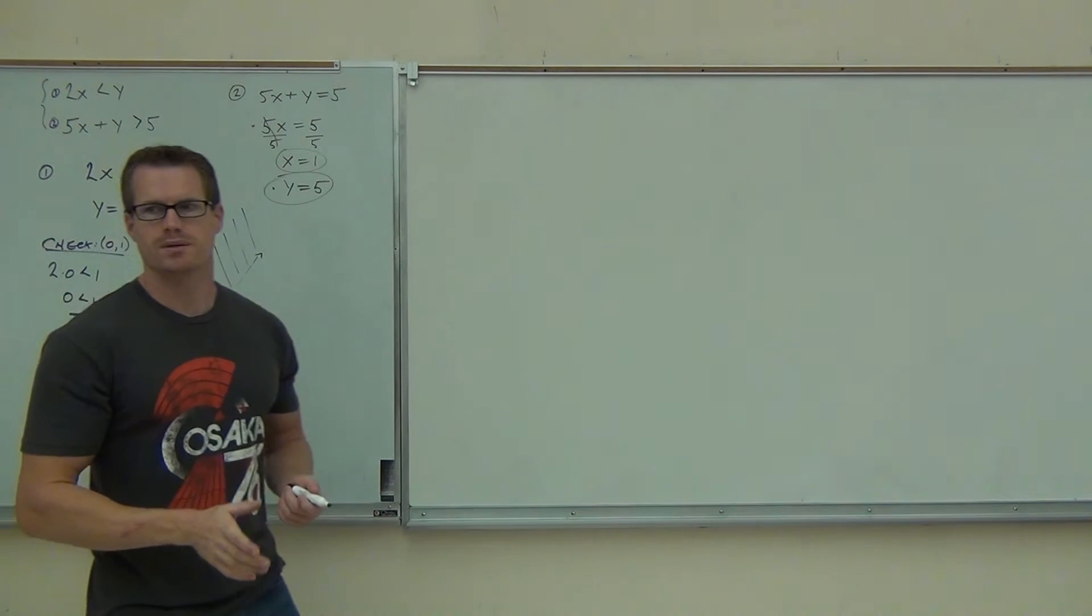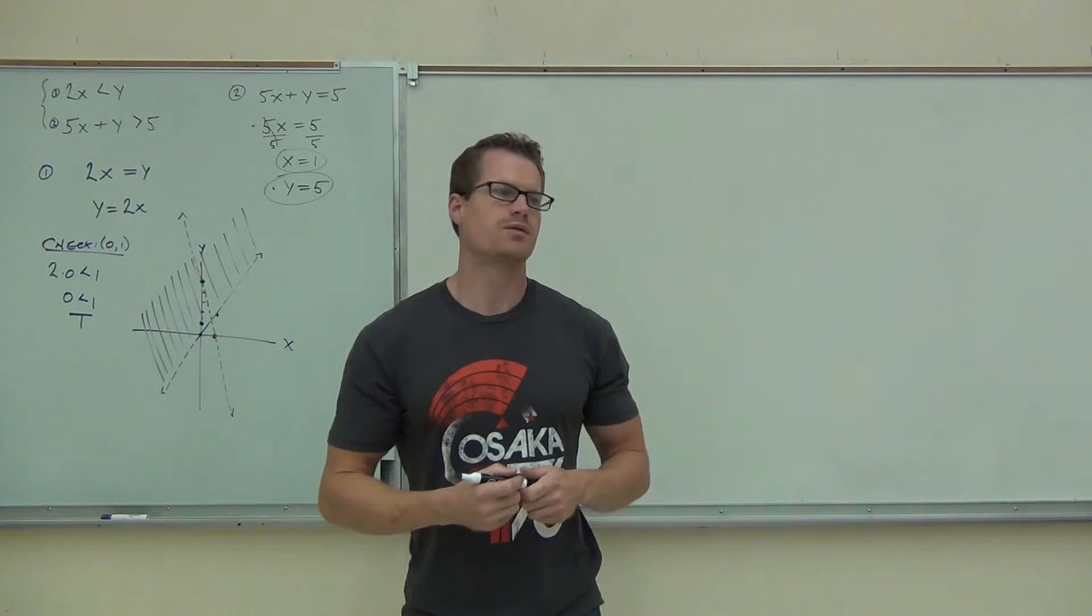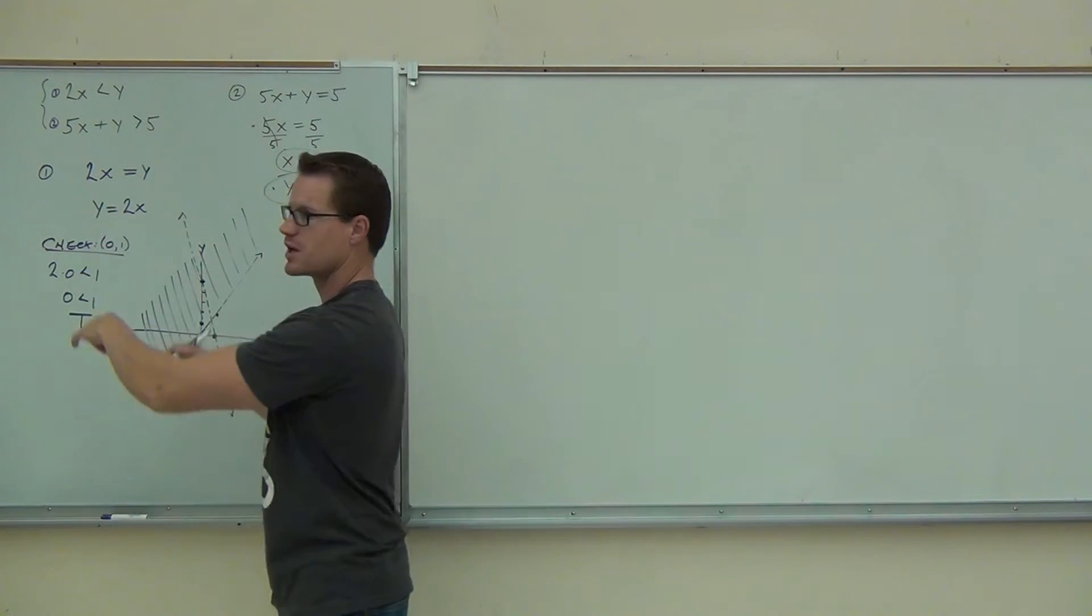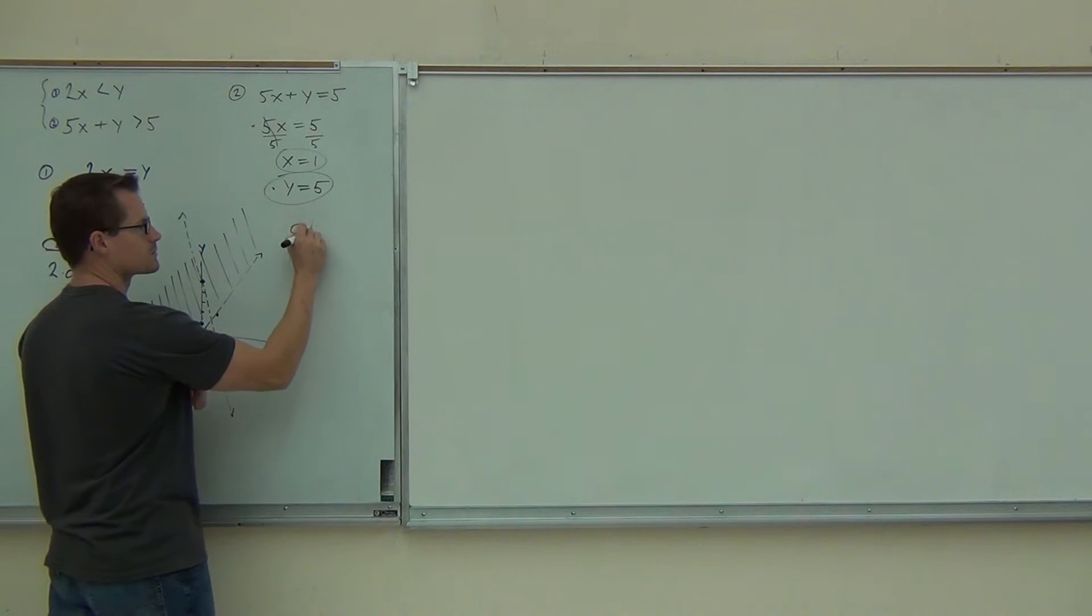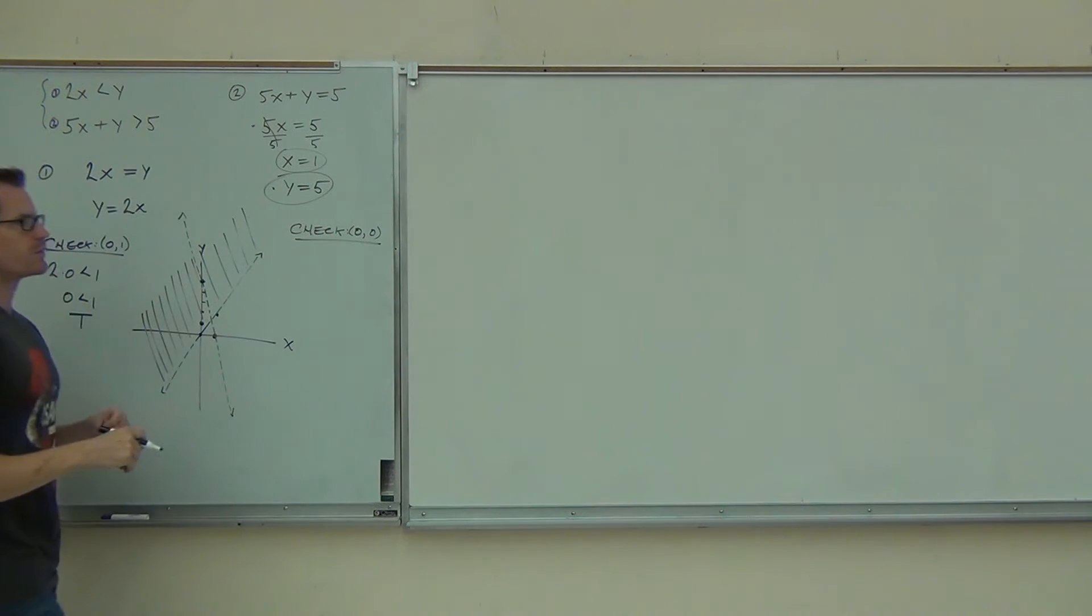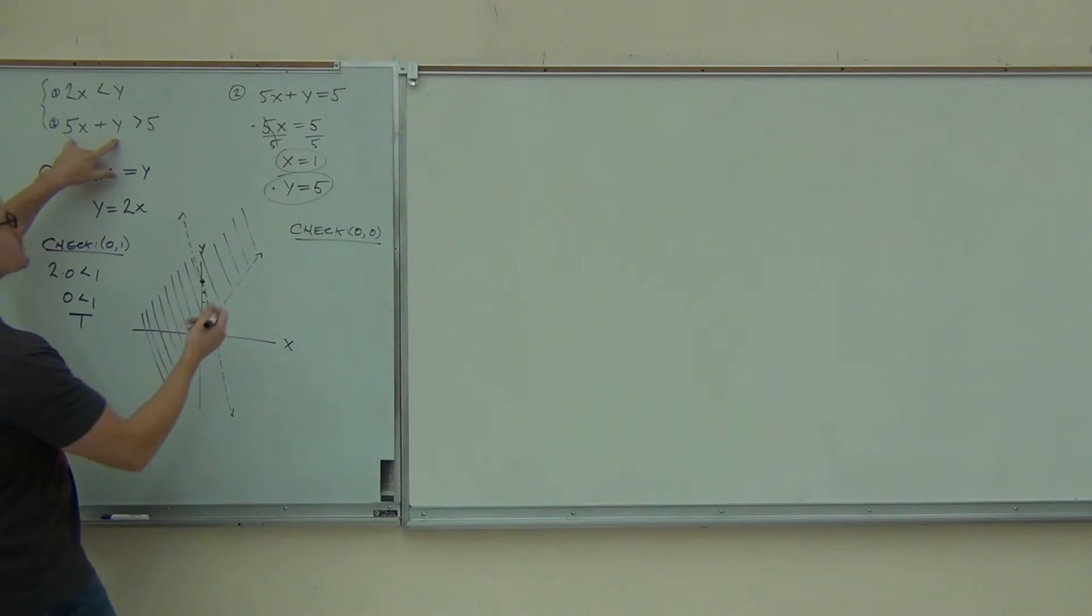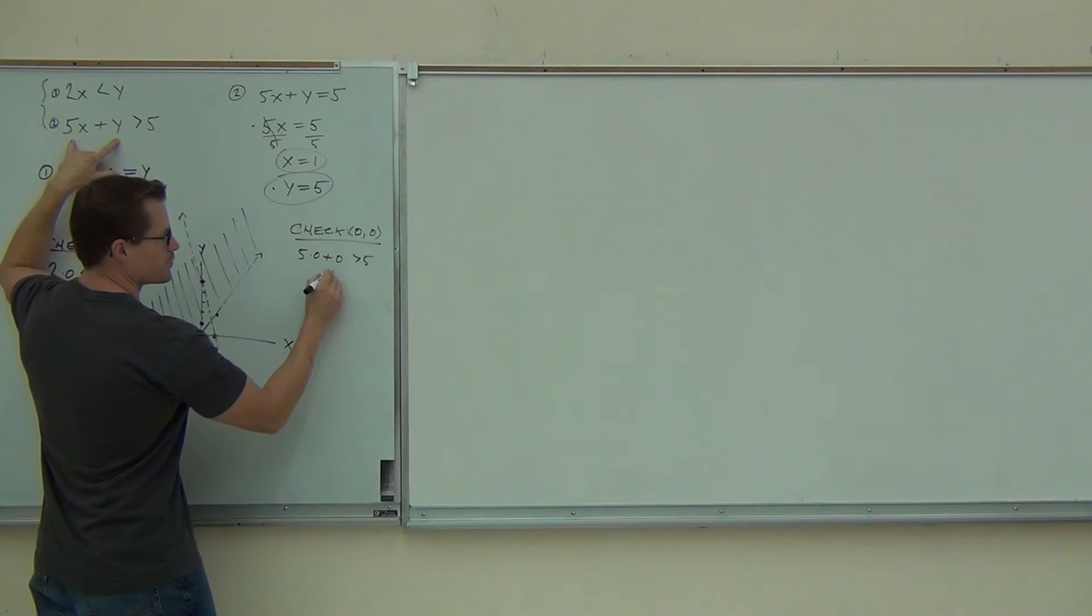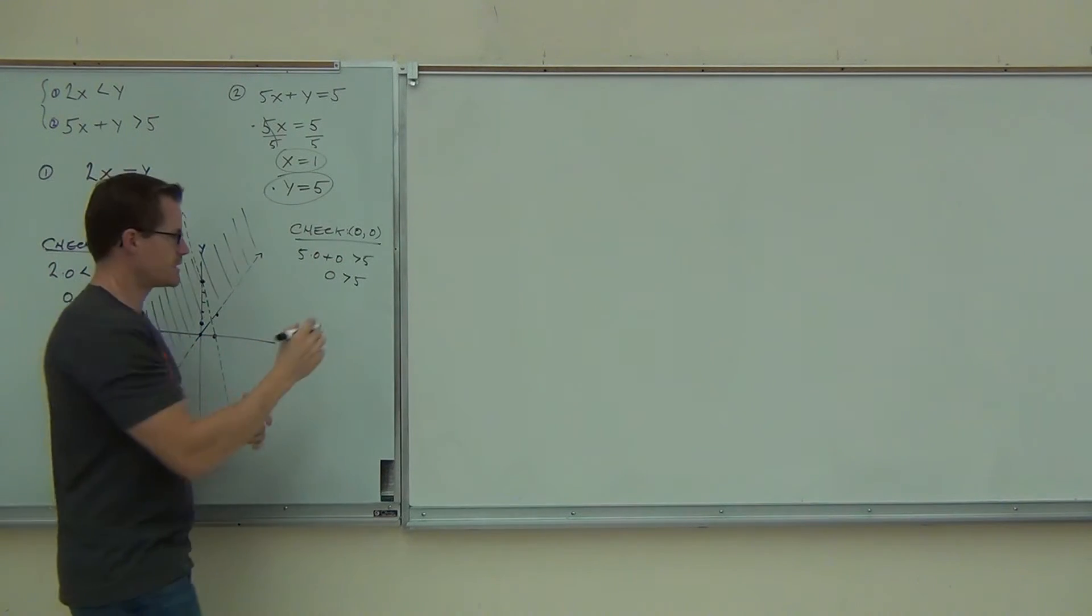And we still need to check a point. Can you tell me what point we're going to check in this instance for this inequality? For sure. Yeah. It's not on the line. Go back to the 0, 0. You don't have to check the same point in both inequalities. Pick whatever one works for you, whatever one's easiest. In this case, 0, 0 is going to be easiest. The reason why it's easiest is it makes one entire side of our inequality equal to 0. We like that. So we're back here at our original inequality. That's 5 times 0 plus 0 is greater than 5. Or in other words, 0 is bigger than 5. Is that a true statement or a false statement?